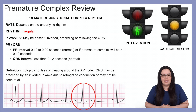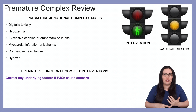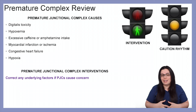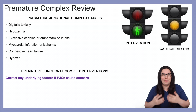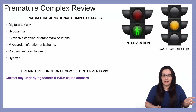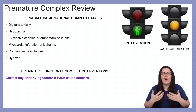The definition for premature junctional complex is ectopic impulses originating around the atrioventricular node. The QRS may be preceded by an inverted P wave due to retrograde conduction, or may not be seen at all. Causes can be digitalis toxicity, hypoxemia, excessive caffeine or amphetamine intake, myocardial infarction or ischemia, congestive heart failure, and hypoxia. Just like with premature atrial complexes, we want to correct the underlying factors if the premature junctional complexes are causing concern.